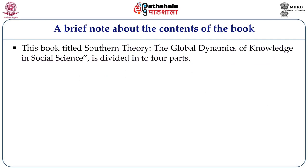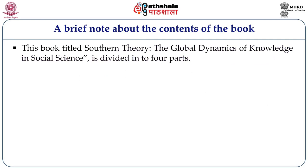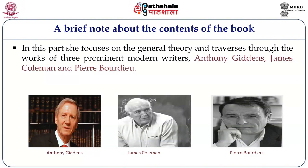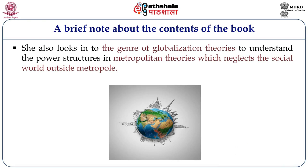The book Southern Theory is divided into four parts. In the first part, she criticizes the false universal claims of Northern Theory by exploring its history. In this part, she discusses the general theory and traverses through the works of three prominent modern writers: Anthony Giddens, James Coleman, and Pierre Bourdieu. She analyzes how their works claim universality by ignoring other parts of the world, as if the whole world existed only in the metropole.